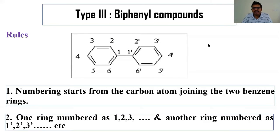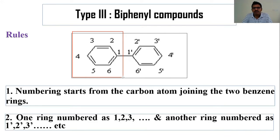Rule two says that one ring is numbered as 1, 2, 3, and the other ring is numbered as 1', 2', 3', etc. The left-hand side ring is numbered 1, 2, 3, 4, 5, 6 and the right-hand side ring is numbered 1', 2', 3', 4', 5', and 6'.